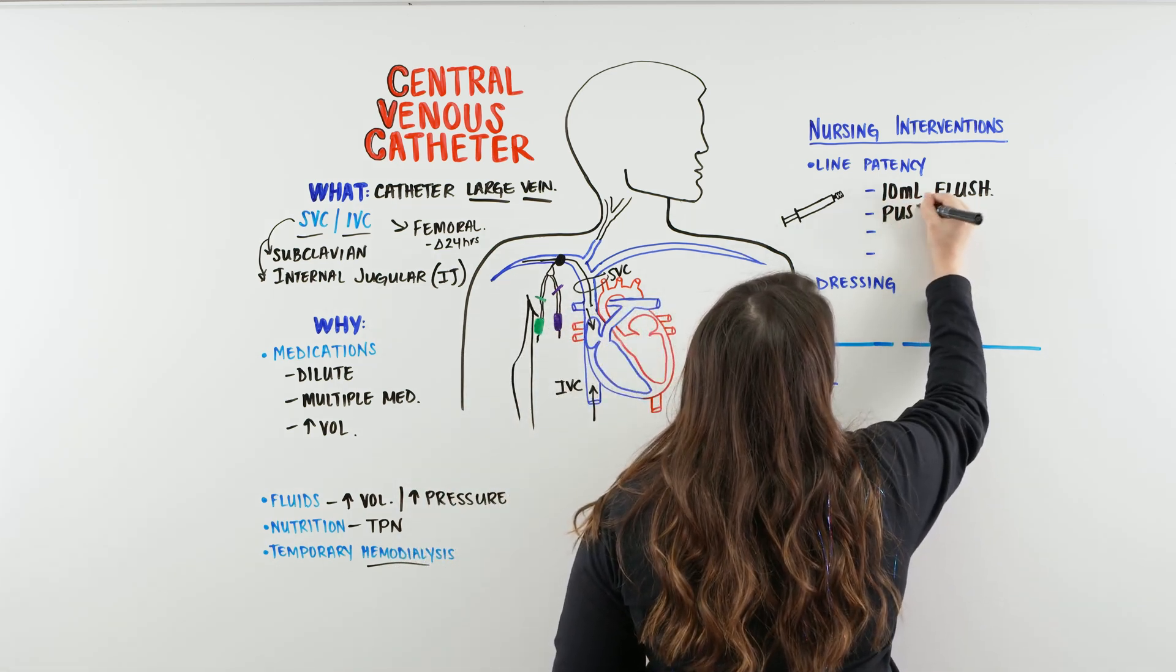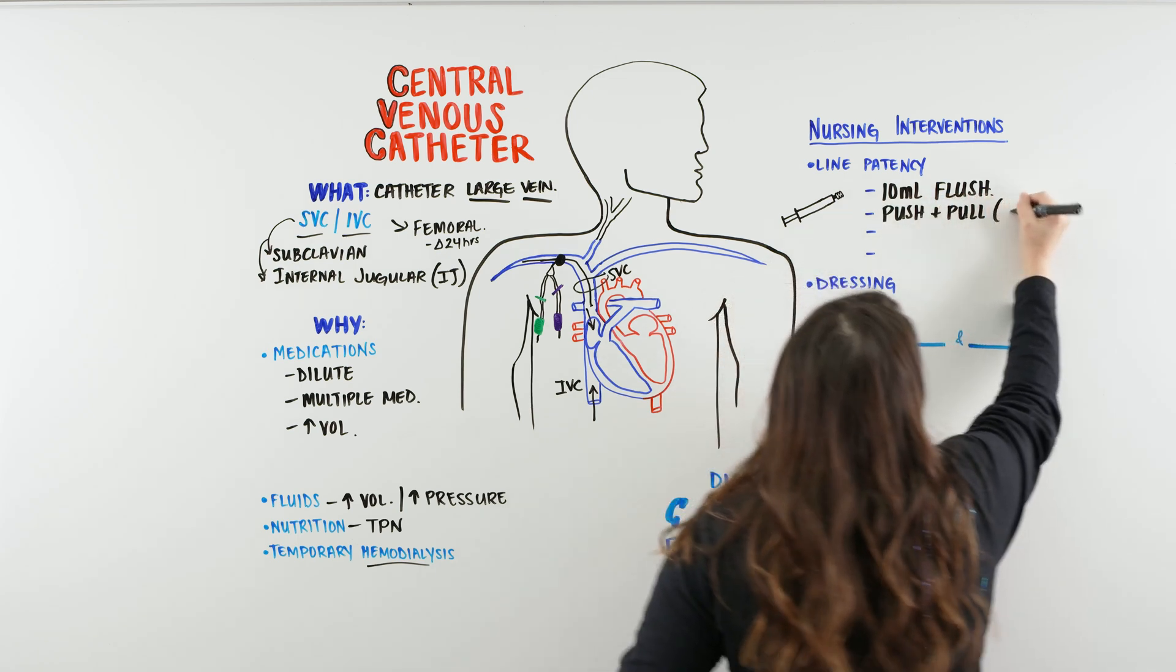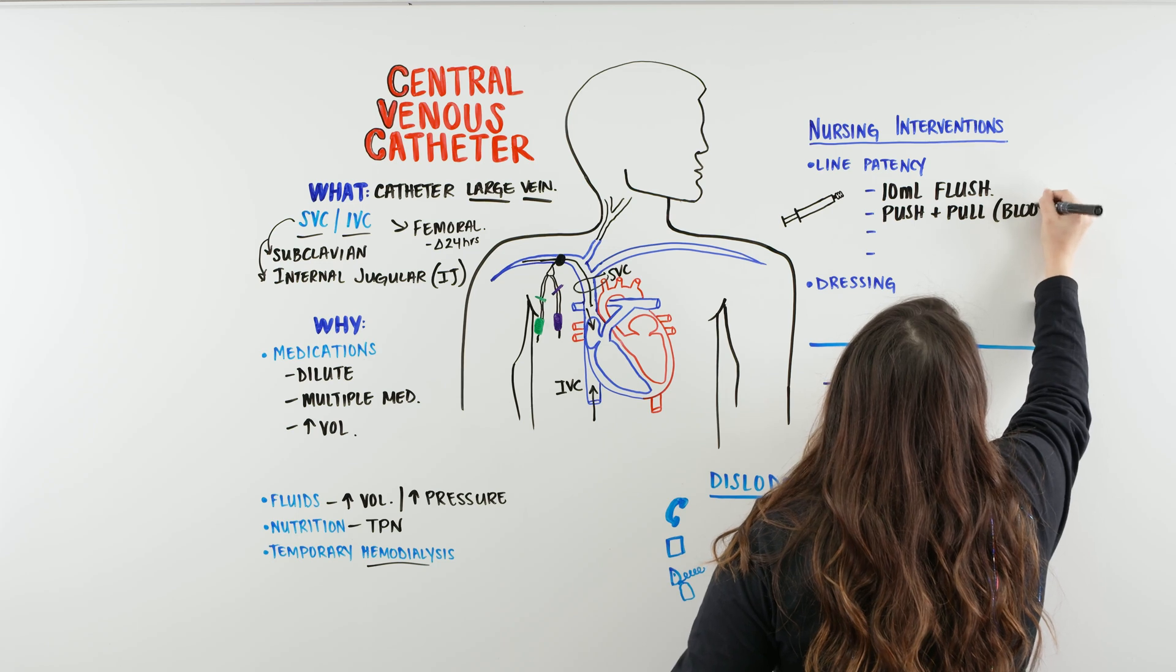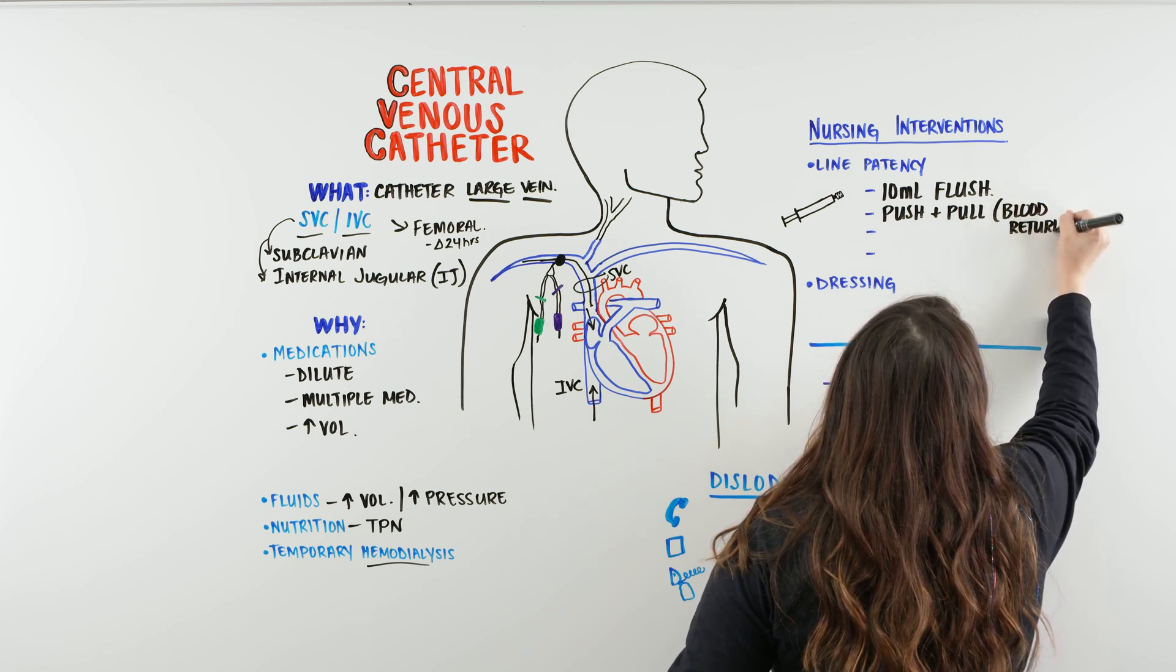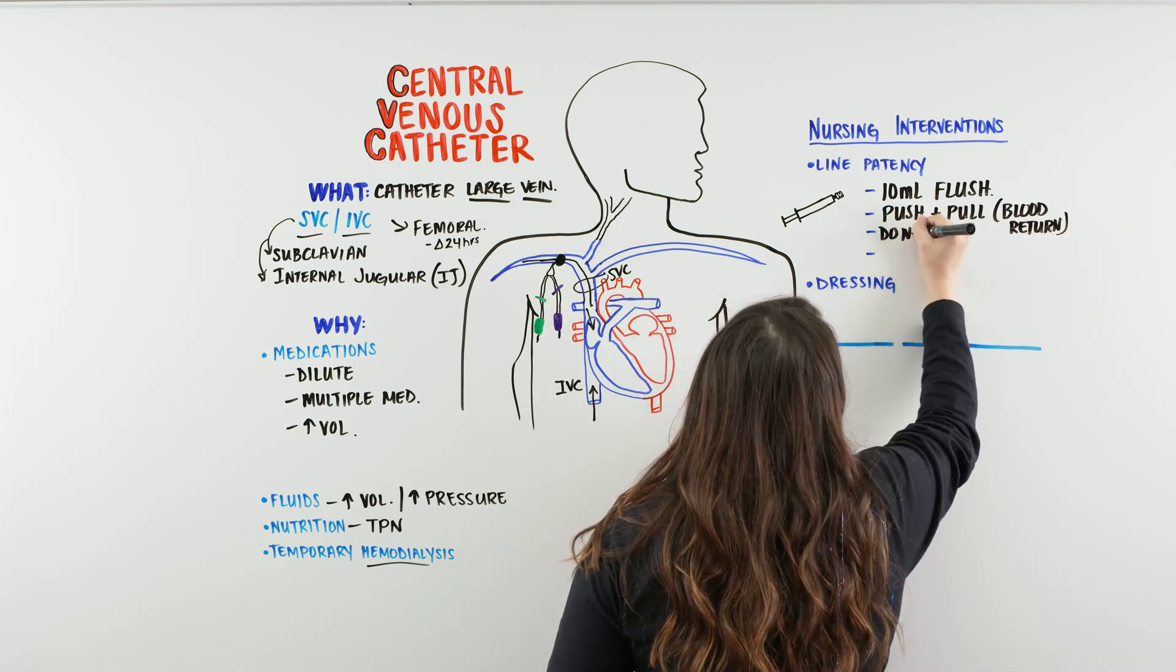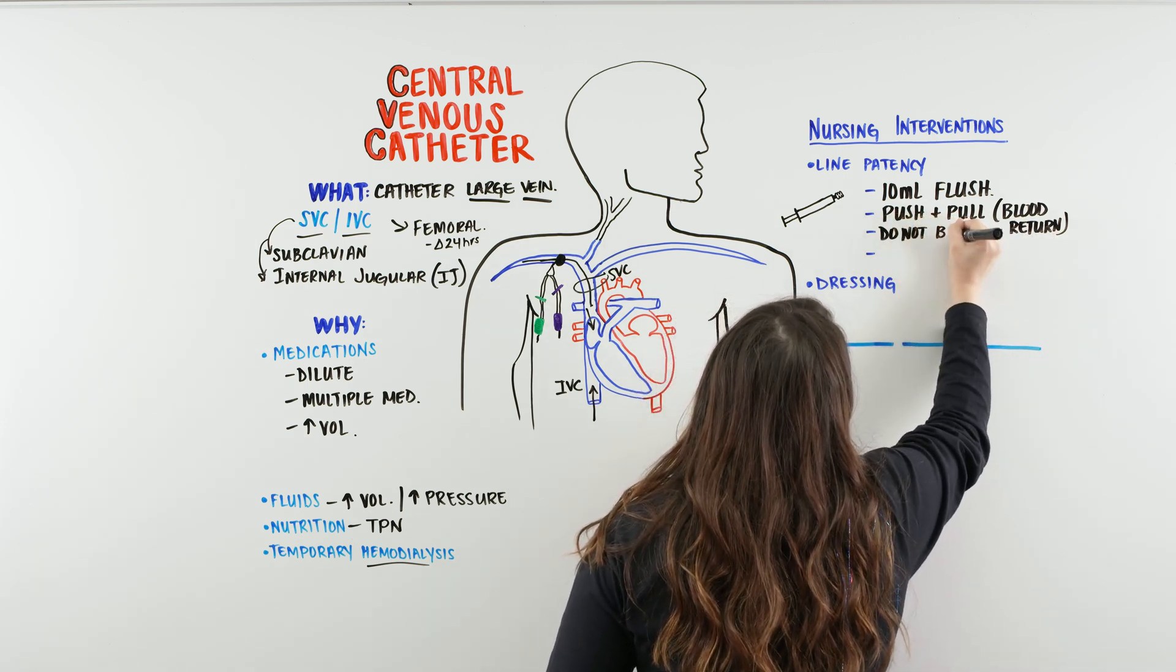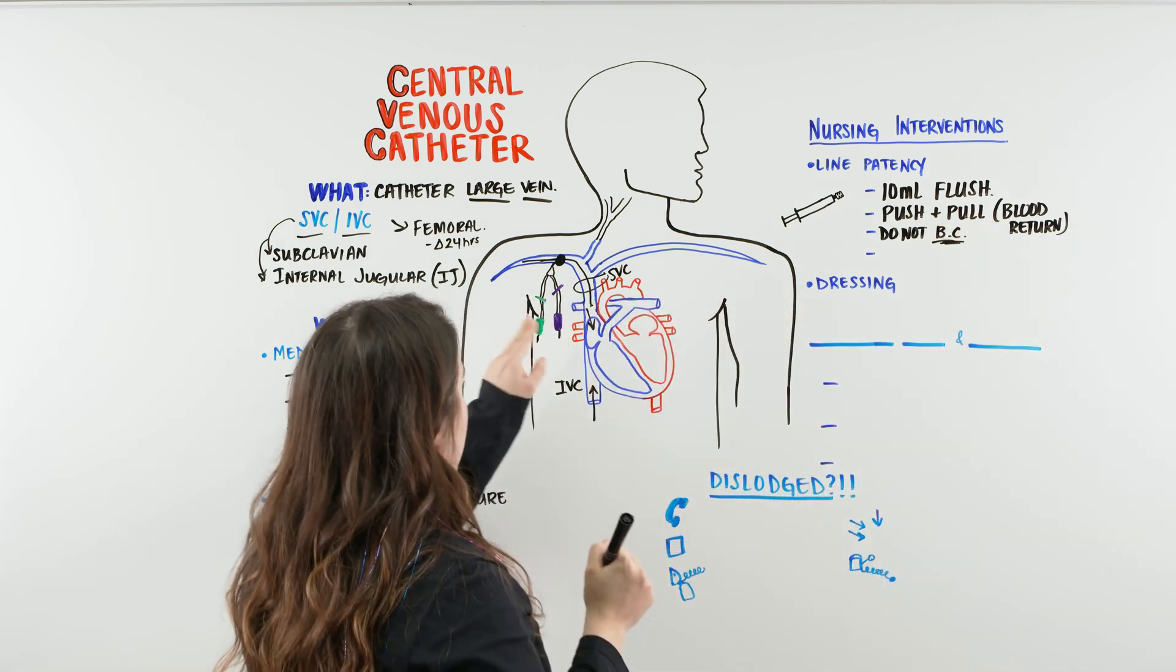What else are we going to be doing? You can be doing the push and pull method. When you do this, making sure that there is return, okay? Now we have our blood return. And with that blood return, do not, do not pull blood cultures, okay? Do not pull your blood cultures from the central venous catheter. Why? Why aren't you pulling them from there?